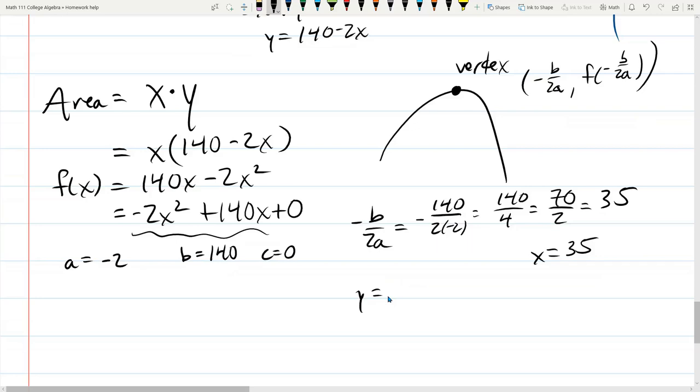Y is written somewhere up here, top of the screen. 140 minus 2X. 140 minus 2 times 35. 140 minus 70 is 70.